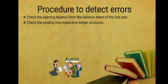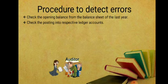The next step is to check the posting into respective ledger accounts. Whatever postings have been made from the journal to the ledger, the auditor needs to check whether the amounts have been properly entered into the correct ledger accounts.